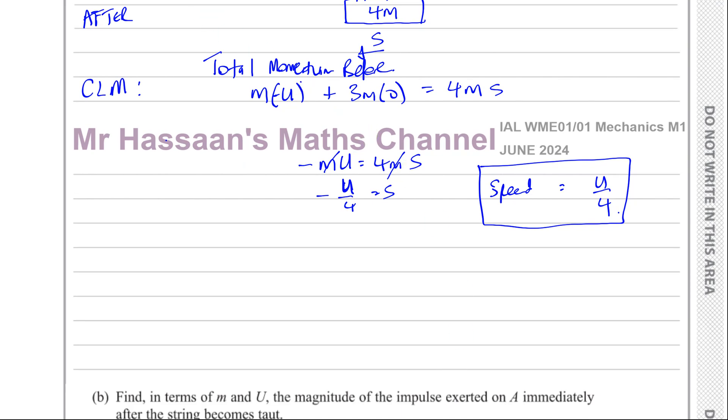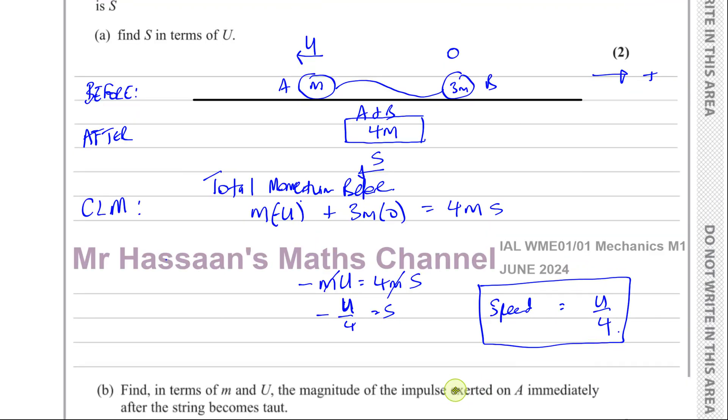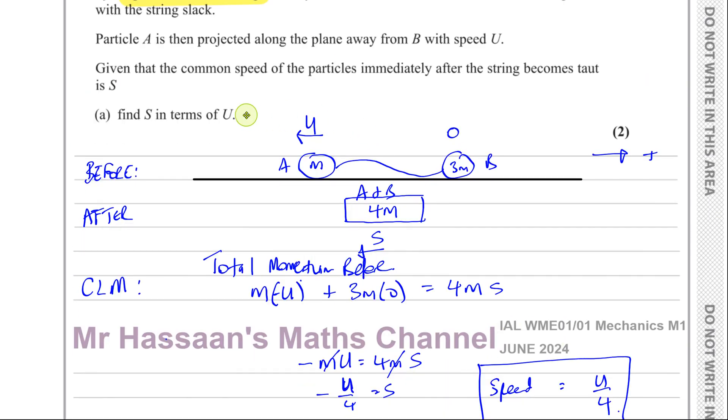Now, for part B, it says find in terms of M and U the magnitude of the impulse exerted on A immediately after the string becomes taut. So A is moving in this direction. But what happens to A is when the string becomes taut, its speed is going to be decreased. Its speed now becomes U over 4 in that same direction. So the impulse acting on A is acting in this direction. Because it slows it down. And the impulse acting on B is acting in this direction. Why? Because it changes its situation. It speeds it up. Starts at zero and then it moves.